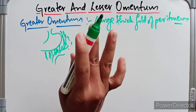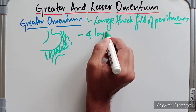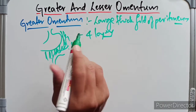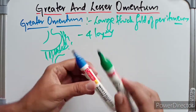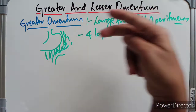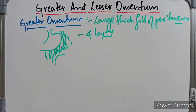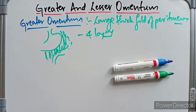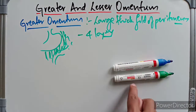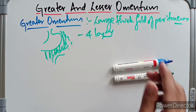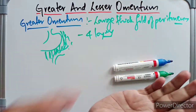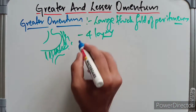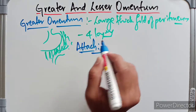The greater omentum is made up of four layers which are fused together to form a thin fenestrated membrane, and they also contain a variable amount of fat. The first and second layers come together and fold on themselves to form the third and fourth layers. There is a potential gap between layers one and two, and layers three and four, and that gap forms the lesser sac.